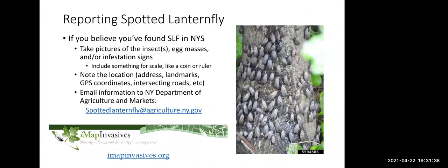To report spotted lanternfly, take a picture of either the insect, an egg mass, or signs of infestation — include something for scale like a coin or ruler. Note the location: an address, landmarks, GPS coordinates, intersecting roads, anything that identifies the spot. Then email all that information to the New York Department of Agriculture and Markets at spottedlanternfly@agriculture.newyork.gov. You can also report to iMapInvasives, which is a great citizen science tool — an excellent reporting device especially for high-priority new invasives that haven't been widely dispersed yet, like hydrilla or spotted lanternfly. It's a great tool for early detection and rapid response management.